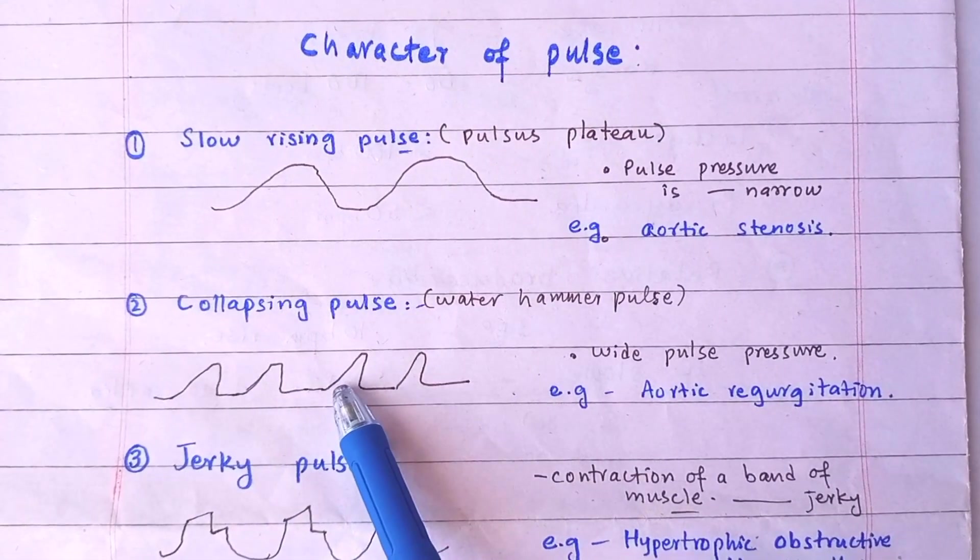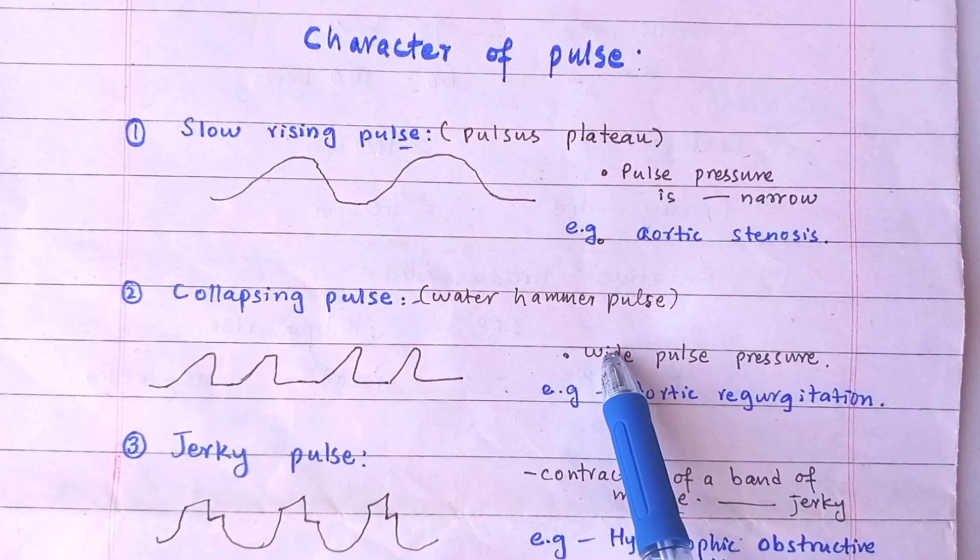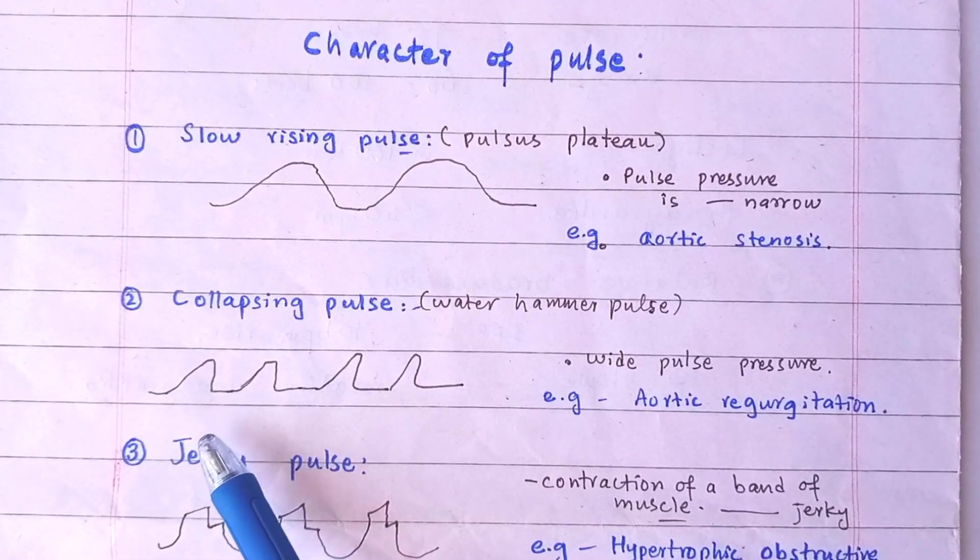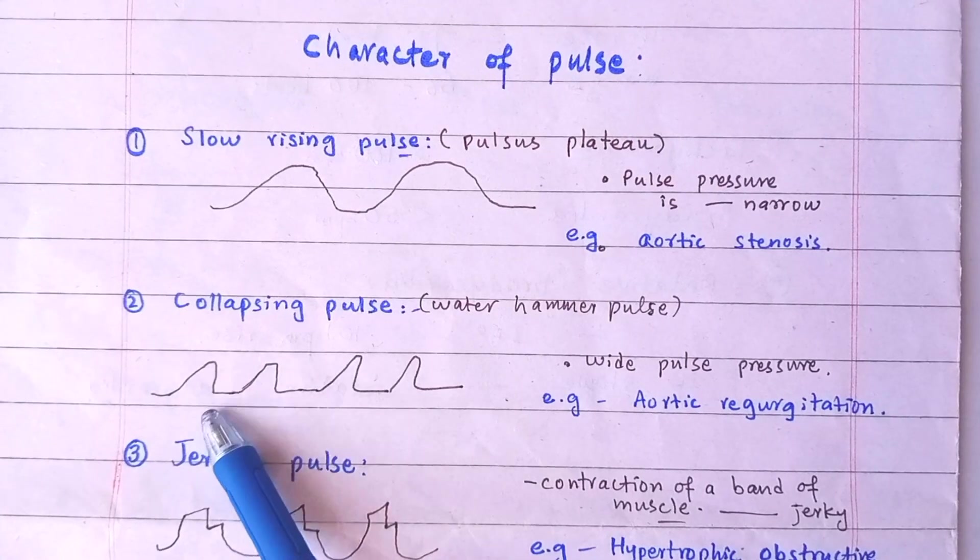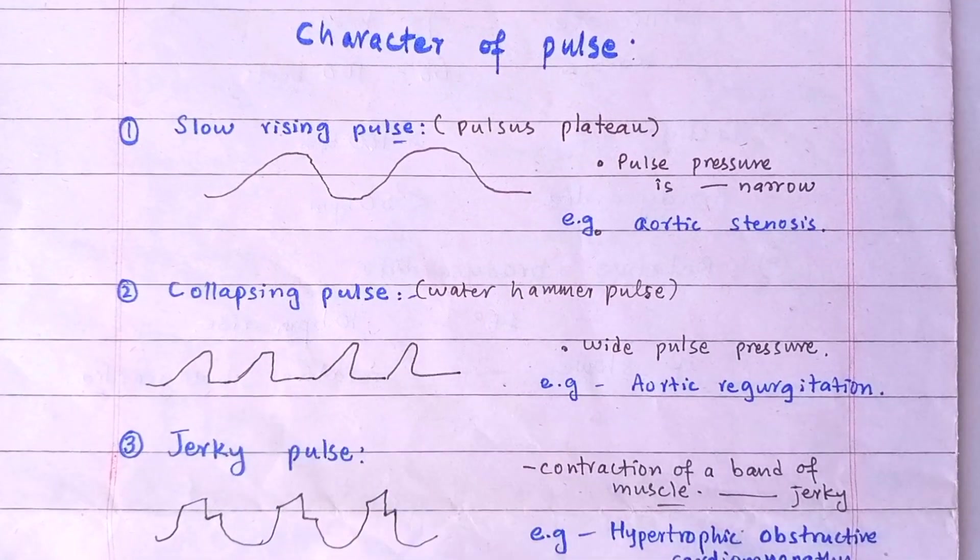Collapsing Pulse, also called the water hammer pulse. It is a high volume pulse with normal upstroke and rapid downstroke waveform. This is collapsing pulse.